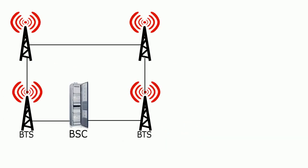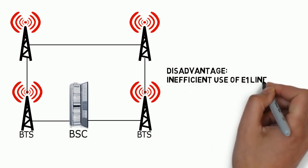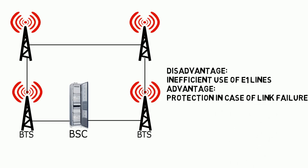Now we come to the ring configuration. Here, as you can see, the BSC, the BTS, and the other base stations are connected in serial but they form a ring. One disadvantage of this scheme is that the E1 channels are not used very efficiently, so the required number of E1s increases. This is because you can connect to a BTS from two different directions — from the right and from the left — so the line cost increases.